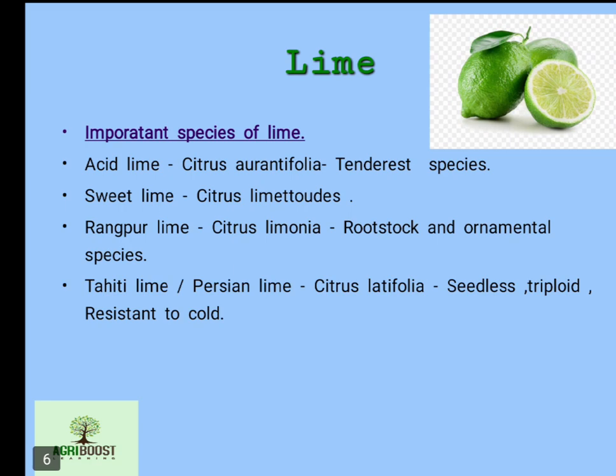The next important species is sweet lime, whose scientific name is Citrus limettioides. The third species is Rangpur lime, scientific name Citrus limonia — it is one of the important rootstocks. The fourth species is Tahiti lime or Persian lime, scientific name Citrus latifolia. It is triploid in nature, seedless, and has a special quality of being resistant to cold.